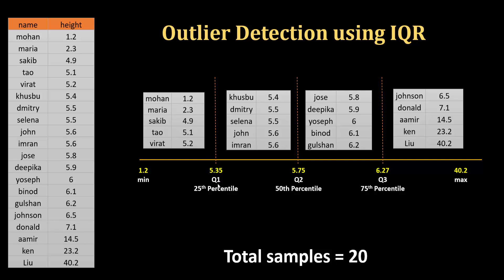Hence 5.35 is the 25th percentile. Similarly, the 75th percentile will be a value of 6.27 — 75 percent of samples have a value less than 6.27, so that's why 6.27 is called the 75th percentile. Your maximum value will be called the 100th percentile because all values are below it. Similarly, the minimum value will be called the 0th percentile because no value is less than it.